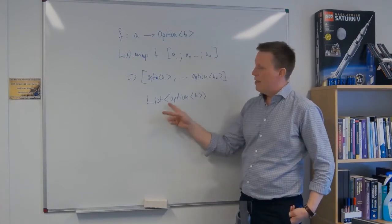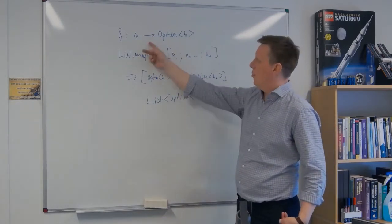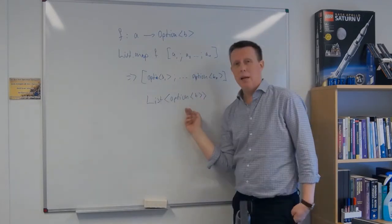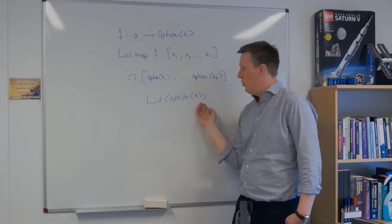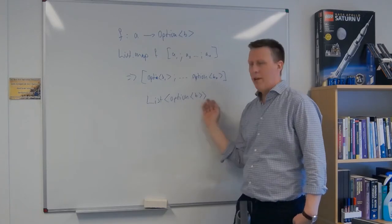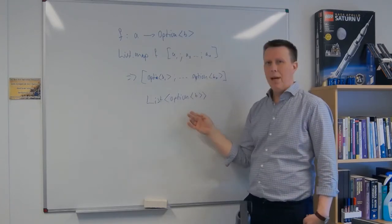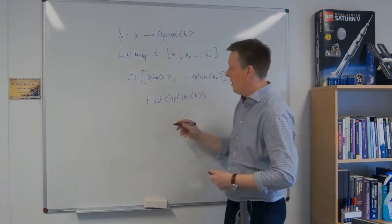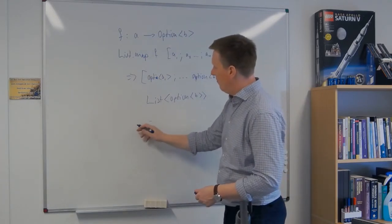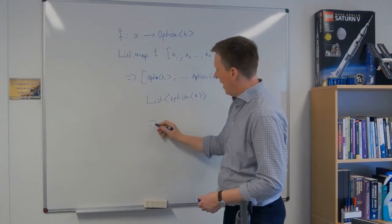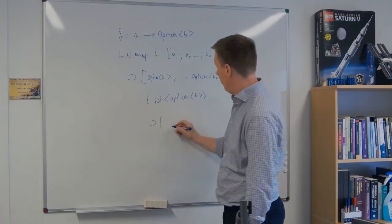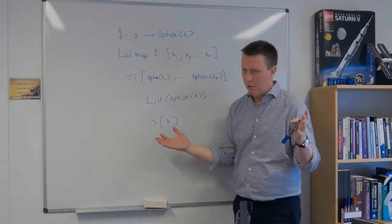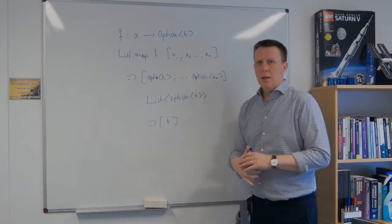Now we know that this list contains stuff that might have failed — some computations might have failed. Depending on your problem, you can look at this and say: all I want to do is filter over this list, get rid of anything that has failed (all the nothings), keep the values, extract those values, fold over this thing, and turn this into a list of b's essentially. That might be what you want, depending on your problem.